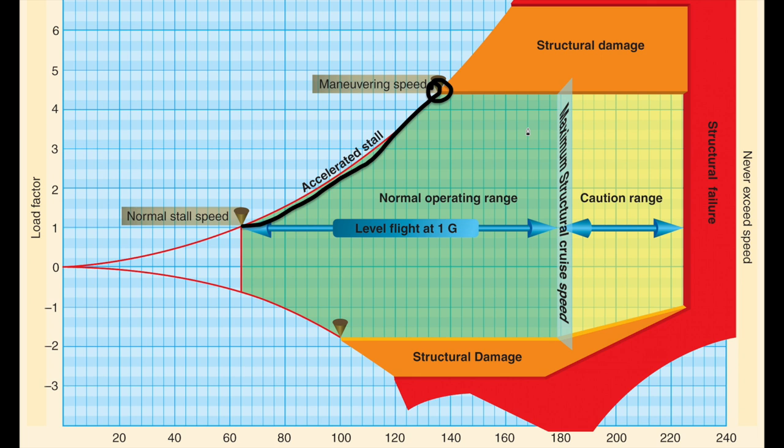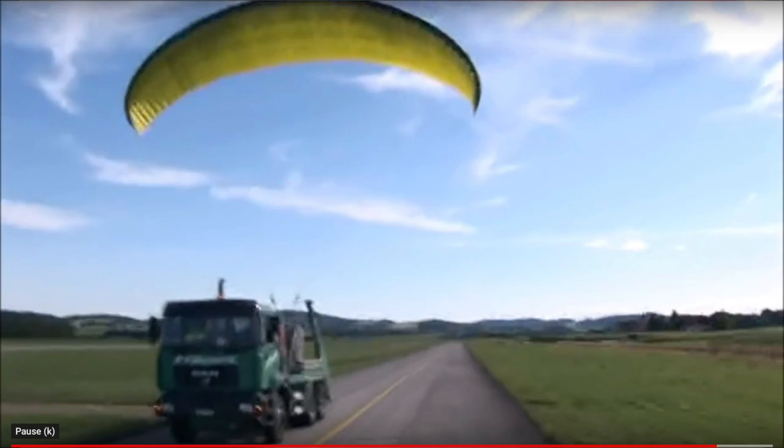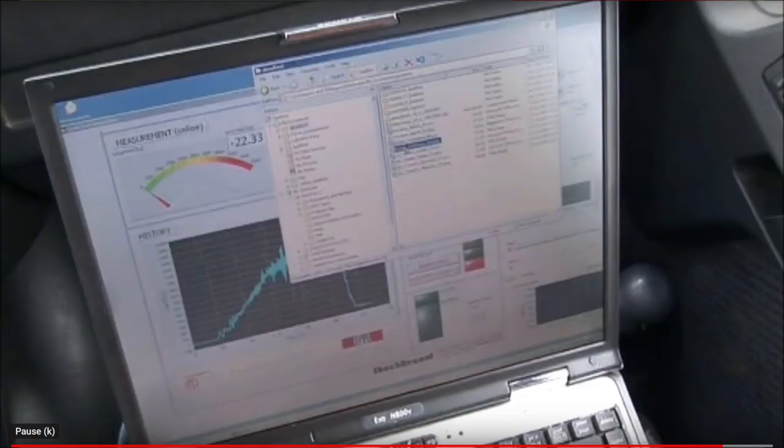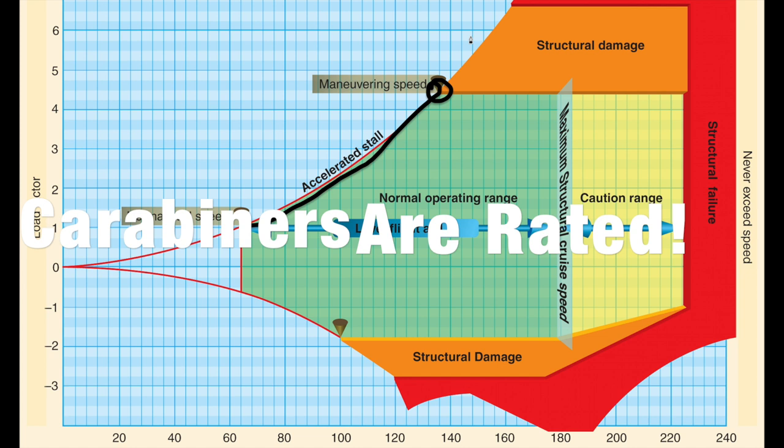This is the number that I really really would like to see all paramotor equipment manufacturers put out there. So how do we find this number? Well typically it's done by destructive testing. I'm not suggesting that every wing manufacturer needs to go out there and test a wing to destruction, but certainly the cost of doing so for swing arms or hook-in points isn't really so much that a small sample at least couldn't be made.